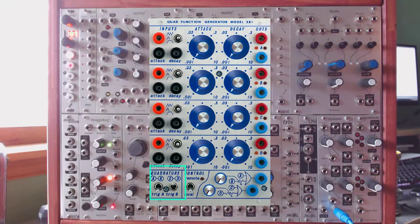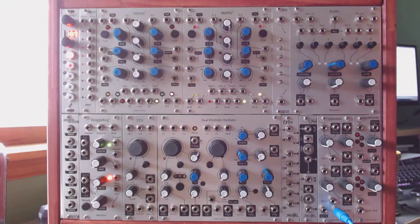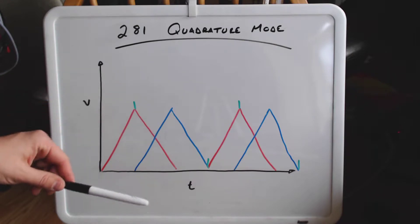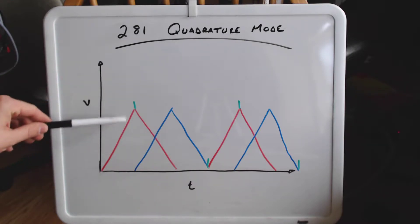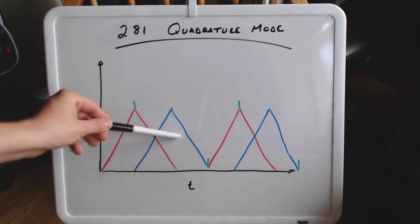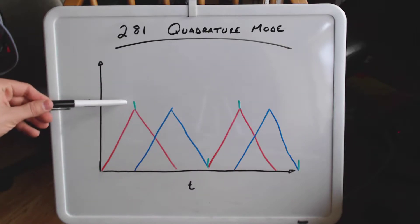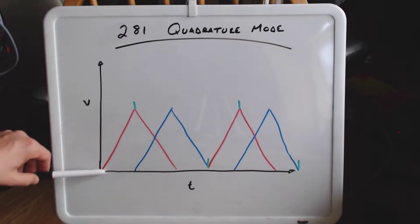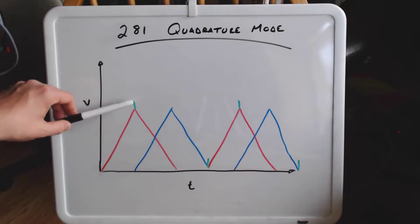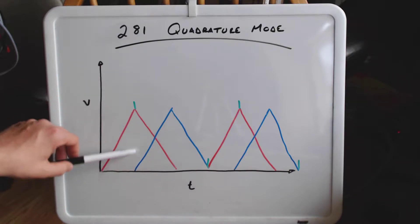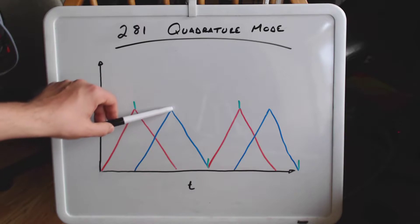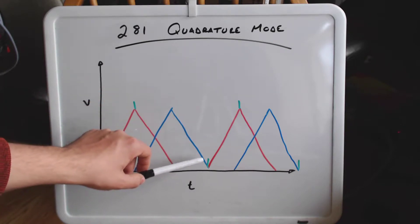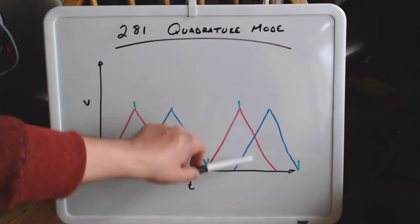We'll be using this to adjust different channels on the Optimix. Here you can see the illustration of Quadrature mode as it applies to Maths. The red curve is channel 1, the blue curve is channel 4. The dashes indicate end of rise and end of cycle. Channel 1 starts, and as soon as it hits end of rise it triggers channel 4. Channel 1 is then falling while channel 4 goes through its cycle. As soon as channel 4 hits end of cycle, that gate triggers channel 1, continuing the pattern.